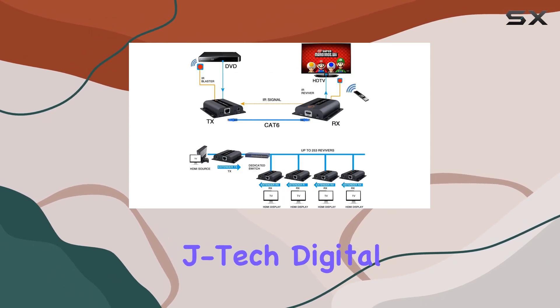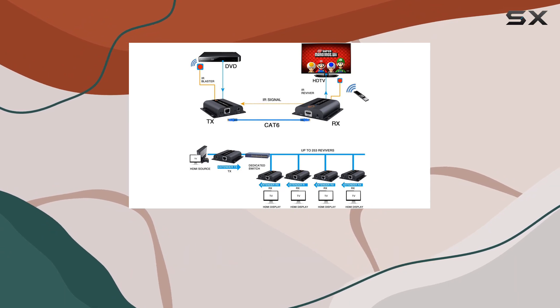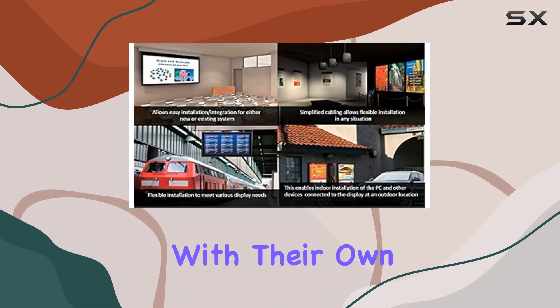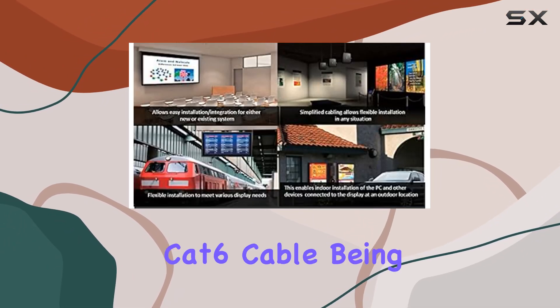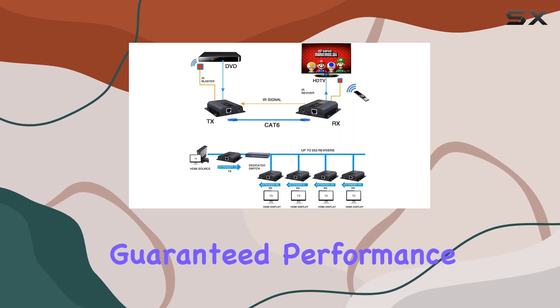For optimal performance, JTEC Digital recommends using solid copper Ethernet cables, with their own custom 150 feet Cat6 cable being suggested for guaranteed performance.